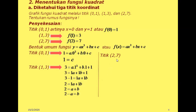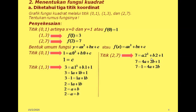Kemudian untuk titik yang ketiga, (2,7). x-nya 2, y-nya 7. Kita substitusikan ke sini. y-nya 7, x-nya diganti 2: 2 kuadrat untuk suku A, b kali 2, dan c-nya tetap diganti 1. Kita sederhanakan: satunya digabungkan, 7 kurang 1 adalah 6. Hasilnya ini bisa kita sederhanakan karena semuanya bisa dibagi 2. Sehingga menjadi 3 sama dengan 2A plus B. Kedua persamaan ini senilai namanya.